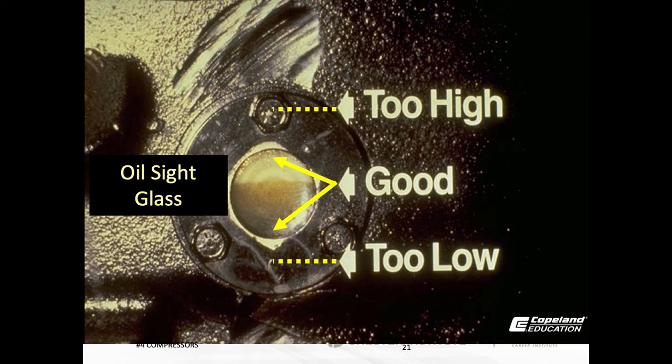On an oil sight glass: if you can't see the top of the oil, it's too high. If you can't see oil at the bottom, it's too low. If the top of the oil is in the middle of the glass, it's in the correct range.